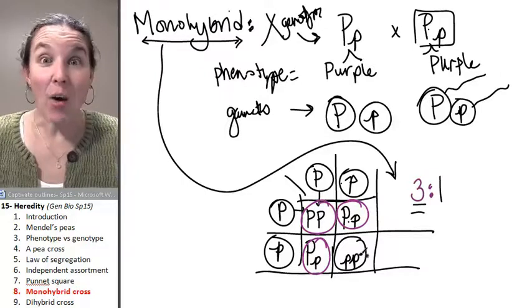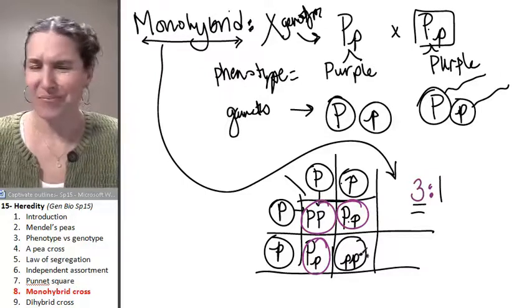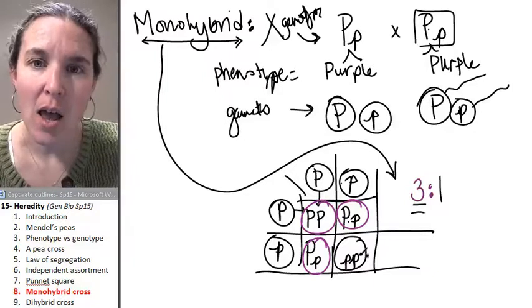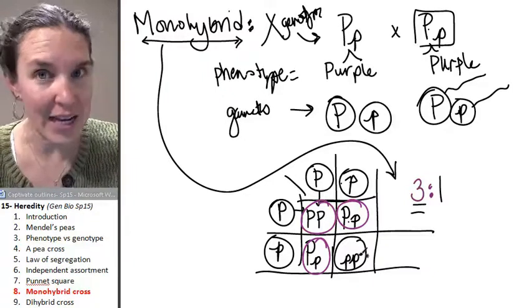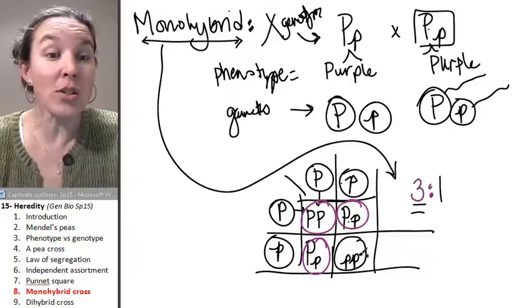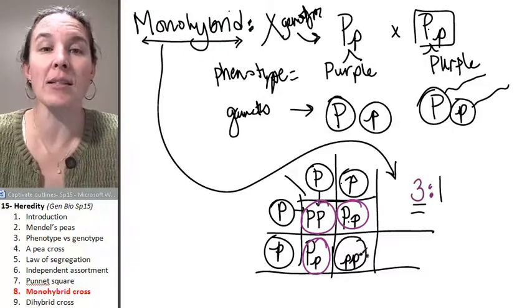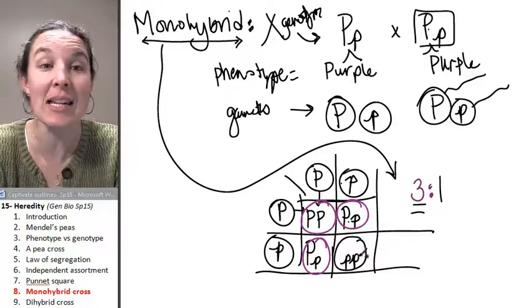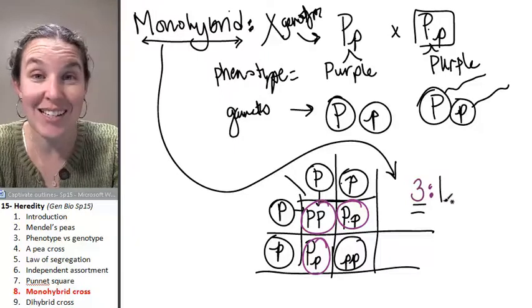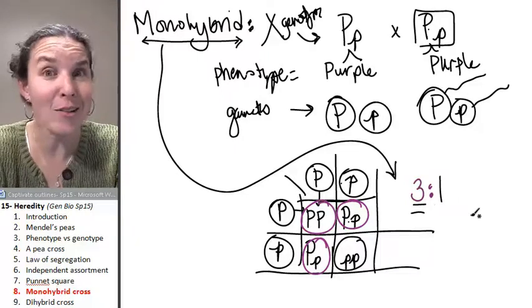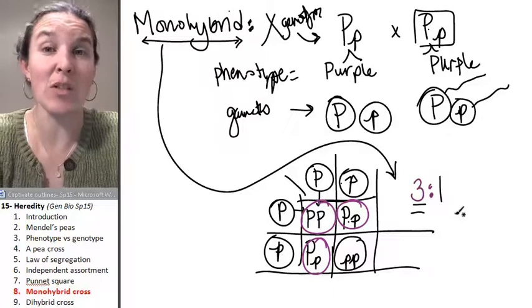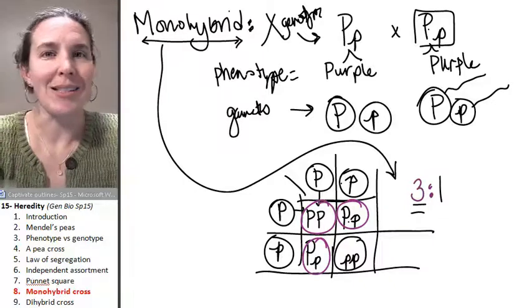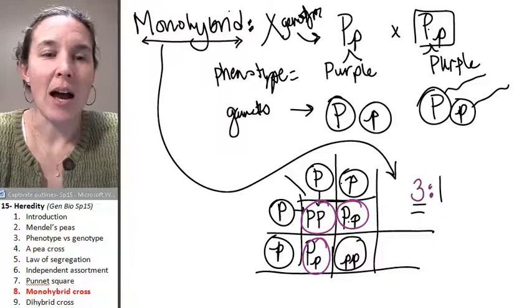So, okay, now, that was easy, right? Piece of cake, dihybrid cross. We're going to cross a purple flower heterozygote that also has some other heterozygous trait that we're going to keep track of. And this is going to get more complicated. The good news is a dihybrid cross also has a guaranteed phenotypic ratio that I will make you figure out. Dihybrid cross is coming at you.